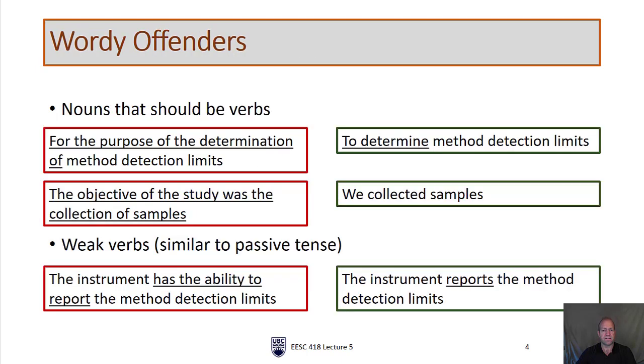Let's look at some ways that we can do that. First is cutting out wordy offenders. There are a lot of different words that we tend to use that we can replace with much shorter and often more powerful words. The first category is nouns that should actually be verbs. For example, 'for the purpose of the determination of method detection limits' can be rephrased to just say 'to determine method detection limits.' There's a hint here: words that end in A-N-C-E, M-E-N-T, or T-I-O-N. For example, rather than say 'for the advancement of,' we would say 'to advance.' Rather than 'for the completion,' we would say 'to complete,' and so on.